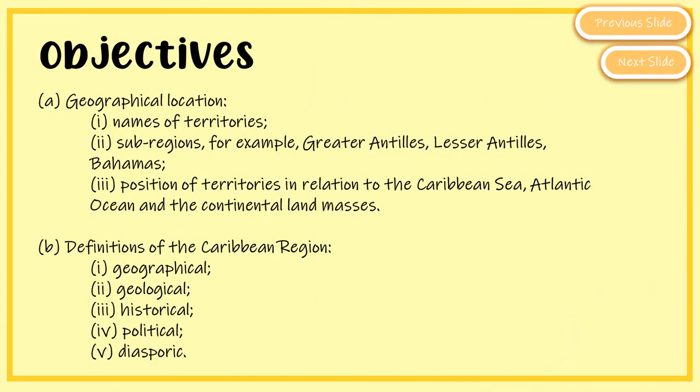Taken straight from the syllabus, the objectives require you to know the names of the territories and where they're situated on the Caribbean map. You're also required to know sub-regions such as the Greater Antilles and Lesser Antilles, different archipelagos like the Bahamas and Turks and Caicos Islands, the position of these territories in relation to the Caribbean Sea, and the definitions of the Caribbean region — and you'll learn why you can't use just one definition, as it's an abstract concept.